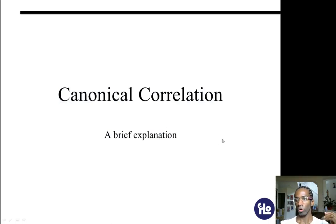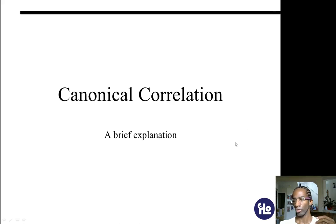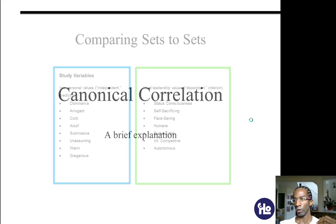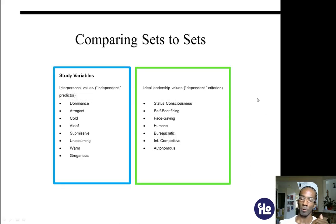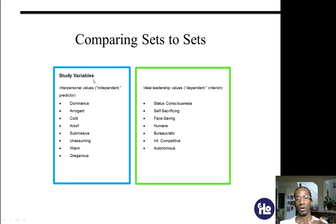In this presentation, I'm going to talk about what a canonical correlation is and how to understand all of its variables, because I struggled with this when I was trying to do this particular kind of research. There's a lot to canonical correlation, but hopefully this video will help you understand it better. Canonical correlation is used to compare sets of related variables to other sets of related variables — these could be continuous or they could be categorical.